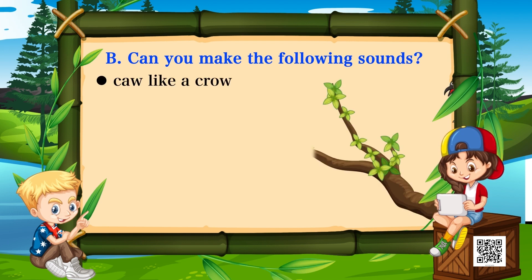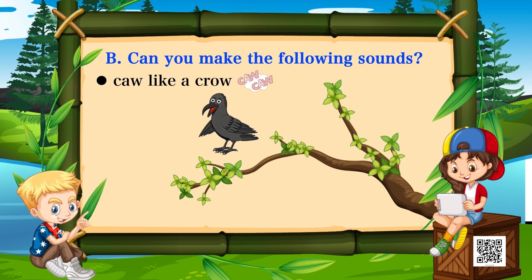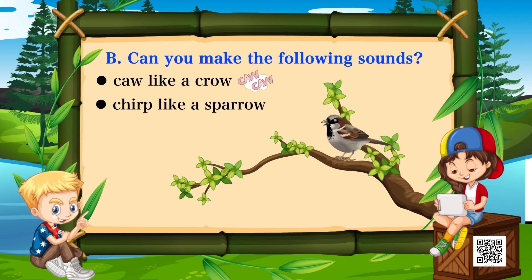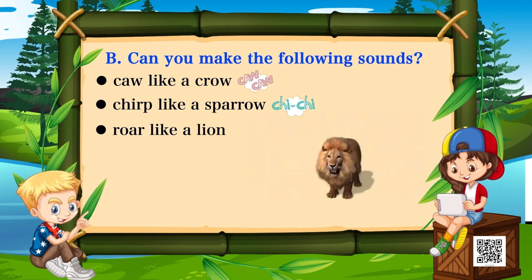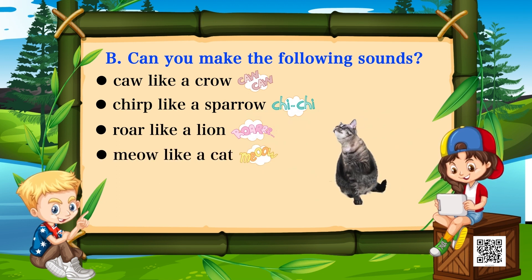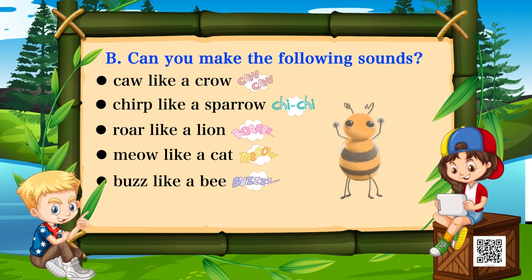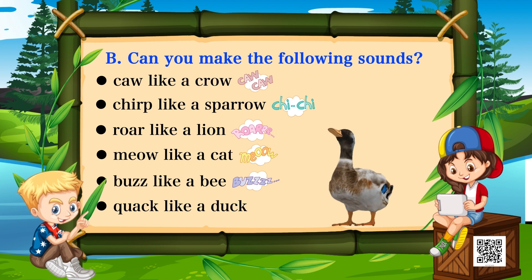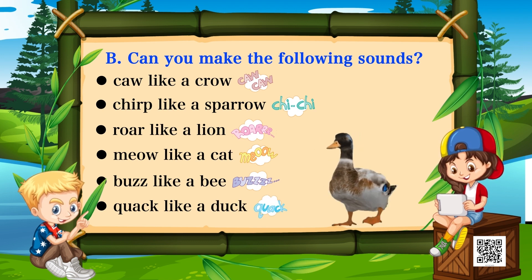You must have experienced different types of animals and birds making different sounds. Can you recall those sounds? Caw like a crow, chirp like a sparrow, roar like a lion, meow like a cat, buzz like a bee, quack like a duck — quack quack quack! Practice all these sounds.